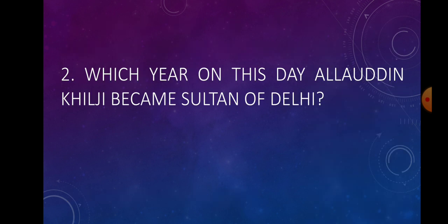Question number 2. Which year on this day did Alauddin Khilji become Sultan of Delhi? Answer: 1296.